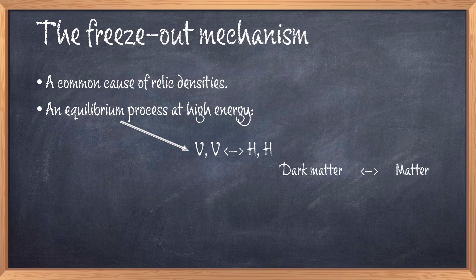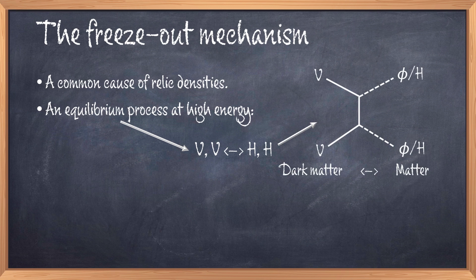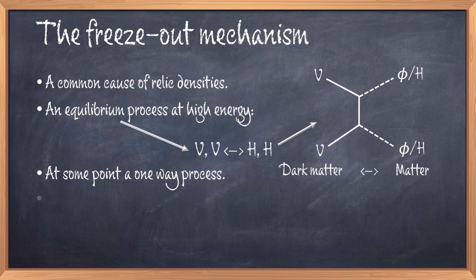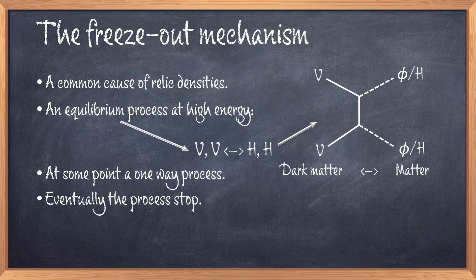At high temperatures this process is in equilibrium and goes both ways. Eventually, at lower temperatures this process begins to favor one direction, and in this case it will favor the direction of usual matter. At this point the dark matter is simply annihilating into regular matter. Obviously, if this process continues for too long, we will just annihilate all the dark matter. The trick is that if the temperature falls even further, then this annihilation process also stops. And thus we are left with some relic density of the dark matter that didn't annihilate because the temperature became too cold. This is why it is called the freeze-out process.